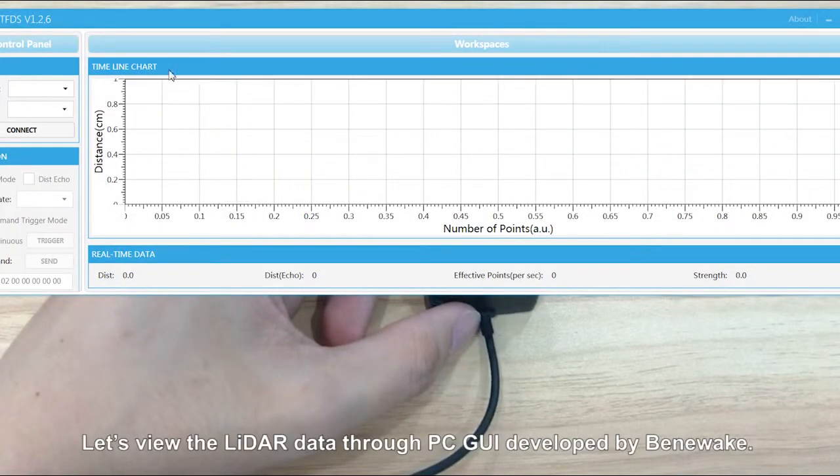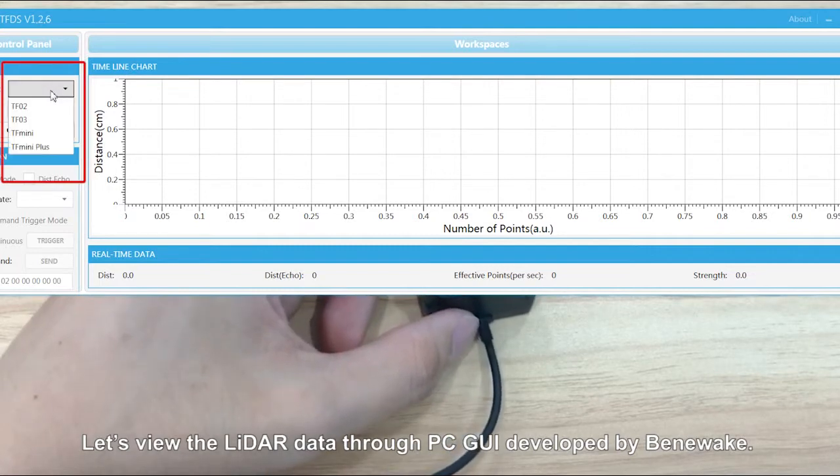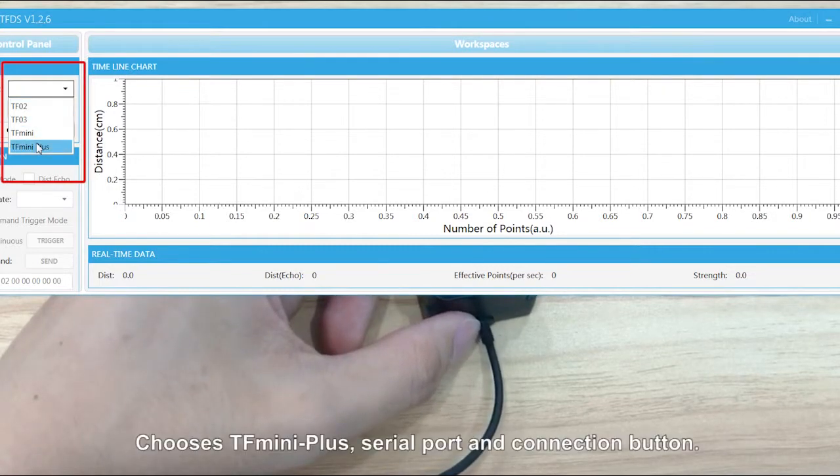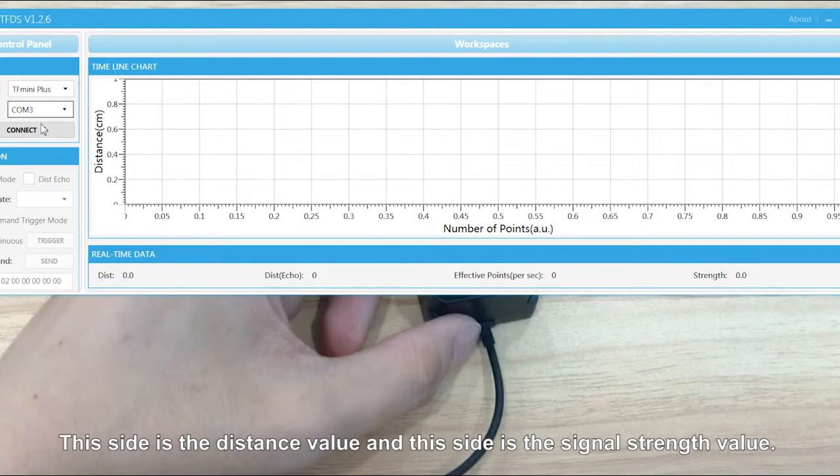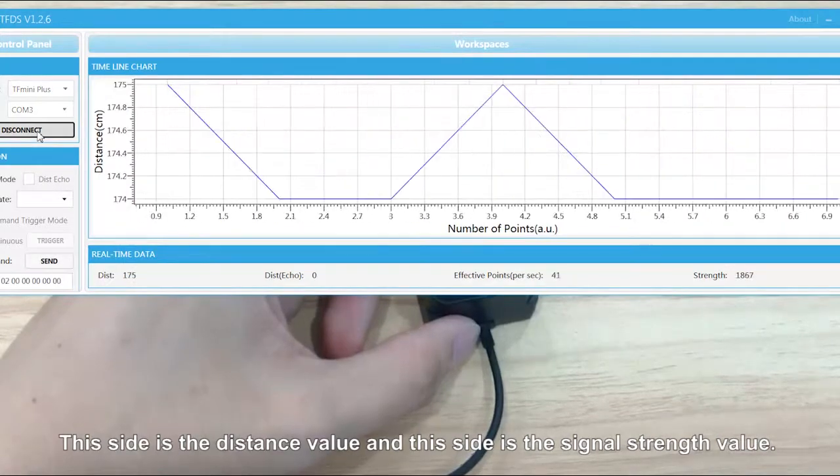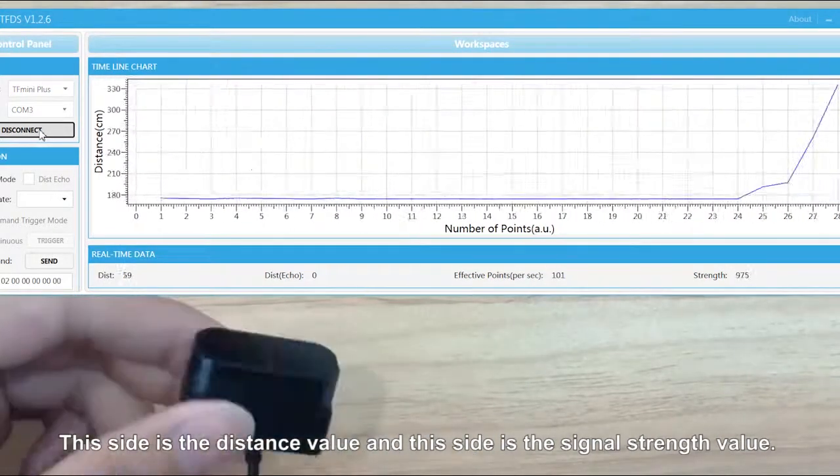Let's view the LiDAR data through PCGUI developed by Benewake. Choose TF MINI+, serial port name, and press Connection button. This side is the distance value, and this side is the signal strength value.